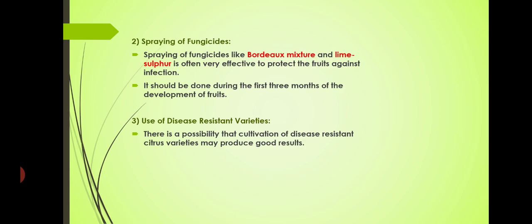Spraying fungicides — even though it is a bacterial disease, fungicides can be used, for example Bordeaux mixture and lime sulfur. Spraying must be done during the first three months of fruit development. After three months, likewise you should spray. The better option is to use disease-resistant varieties, which will give good results.